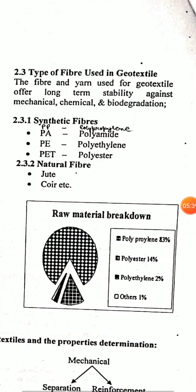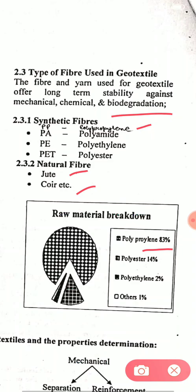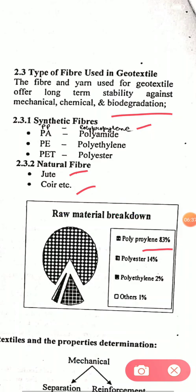Types of fiber used in geotextiles: the fibers and yarns used offer long-term stability against mechanical, chemical, and biodegradation. Synthetic fibers are mostly used — polypropylene is the dominant choice, followed by polyamide, polyethylene, and polyester. In natural fibers, jute and coir are used. By ratio, polypropylene covers 83%, polyester 14%, polyethylene 2%, and others 1%.